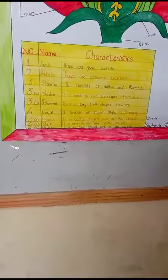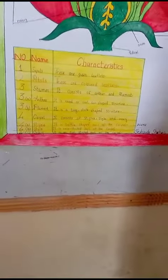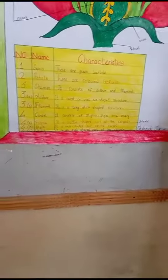The fourth part is the pistil. There are three parts of the pistil. It consists of stigma, style, and ovary.